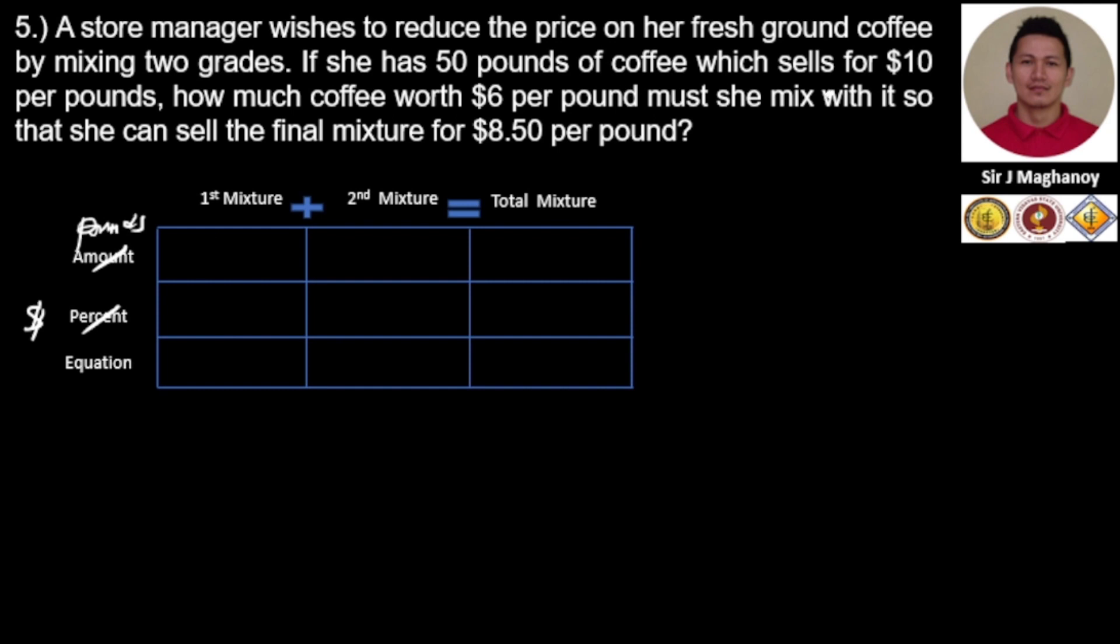First, what is our first mixture? That is 50 pounds which sells at $10. So first mixture: 50 pounds at a price of $10. The second mixture: how much coffee worth $6 she'll mix?